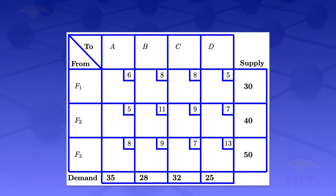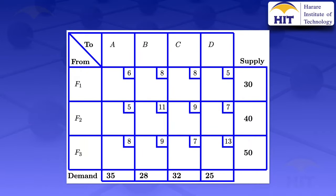So now to find this initial basic feasible solution using the Northwest Corner Method, we start by looking at the top left-hand cell, this one here. We check the supply and the demand, and we look at the minimum of those two highlighted in yellow — the 30 and the 35. The minimum there is 30, so we can allocate 30 units in that cell, the cell in green.